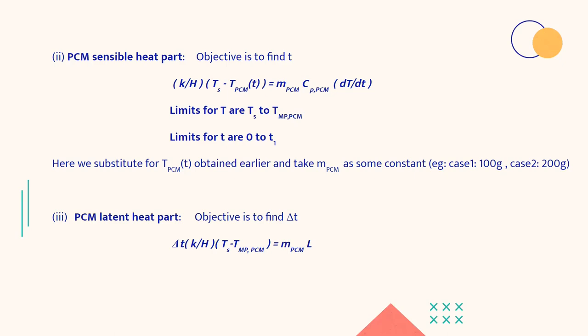So from that, we have got the time required by the PCM to reach its melting point. Then we calculate the PCM latent heat part, the time required by the PCM to reach its melting point to fully melt. So we have calculated delta t. We have considered it as delta t k by h (Ts minus T melting point) to be m PCM into L. m PCM we have taken as a fixed mass of PCM taken and L is the latent heat of vaporization.